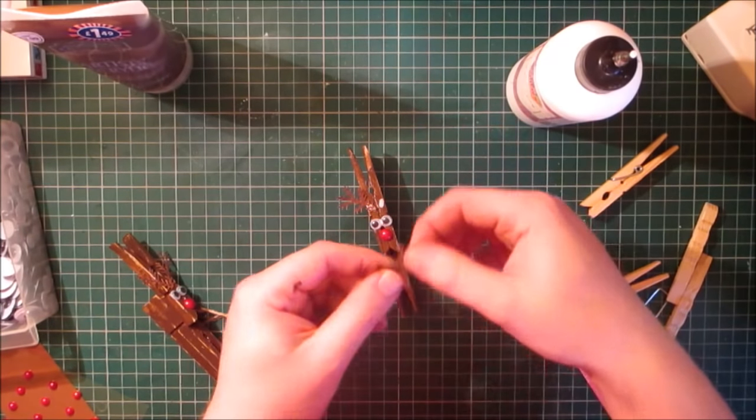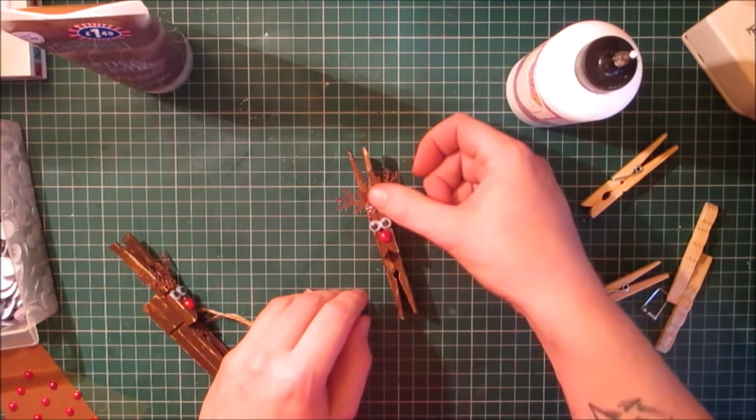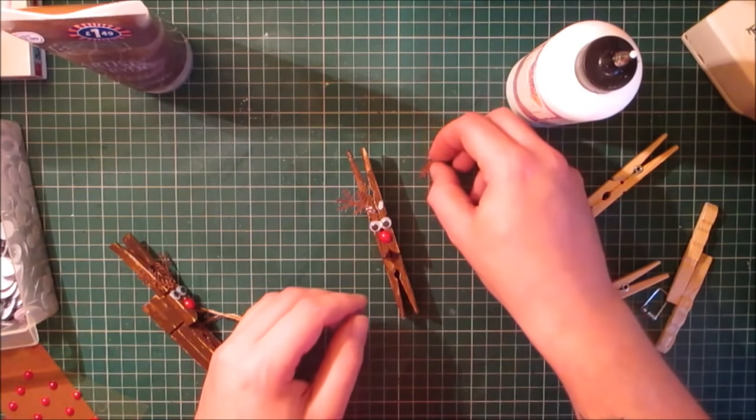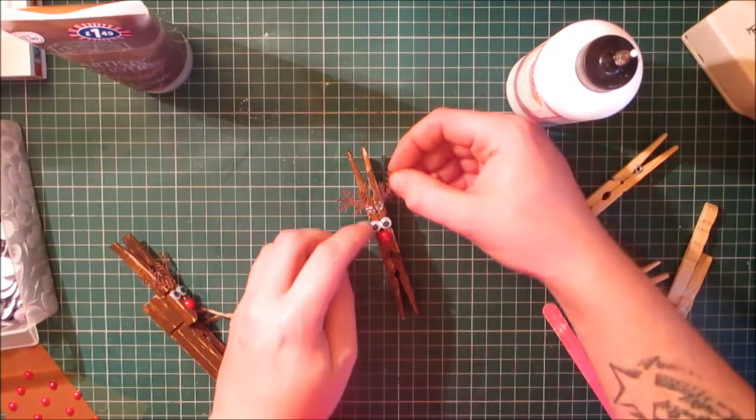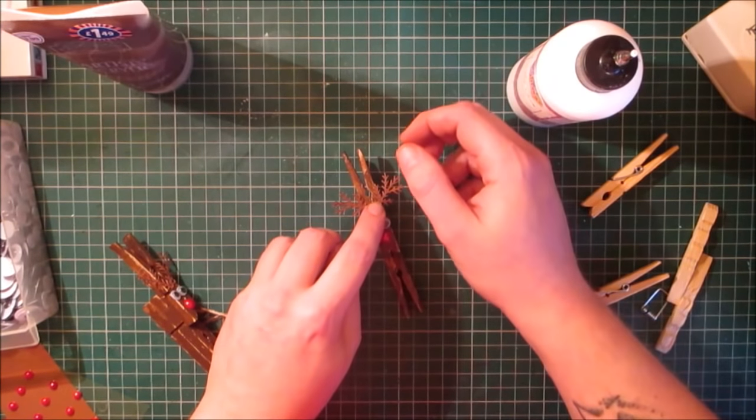I suggest you use double-sided or cardstock that's the same on both sides because obviously one has to go in one direction and one in the other. So if you use cardstock that's got a white back, you're going to get one brown one white.